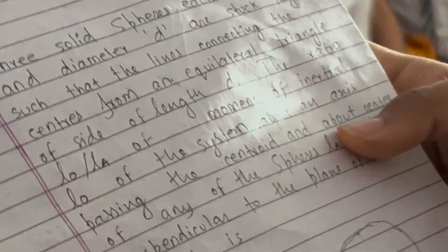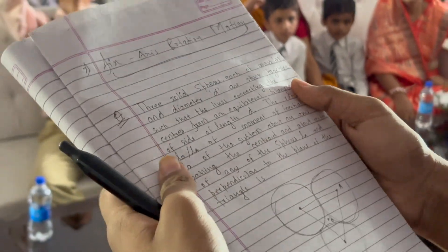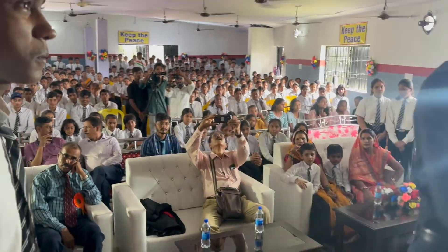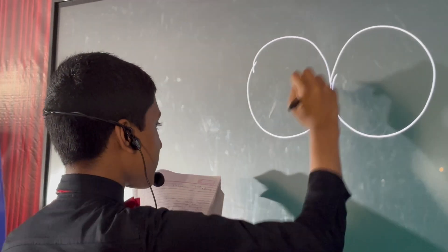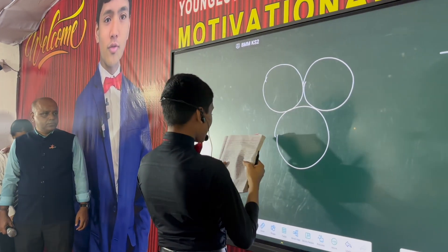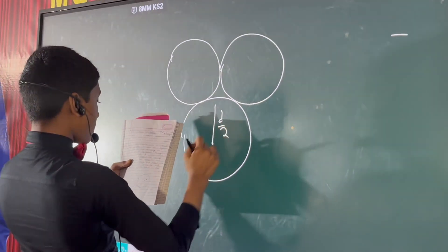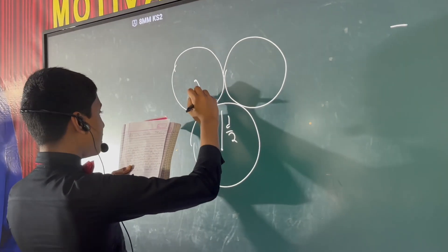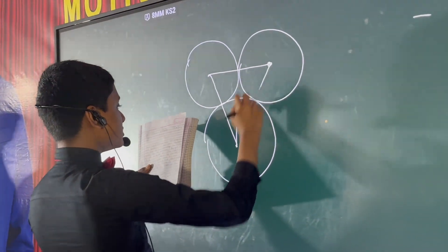The ratio L₀/L_A — the moment of inertia L₀ about the system. These three spheres of mass M and diameter D, so radius P/2, are stuck together such that the lines connecting the centers form an equilateral triangle of side length. Okay, that makes sense.